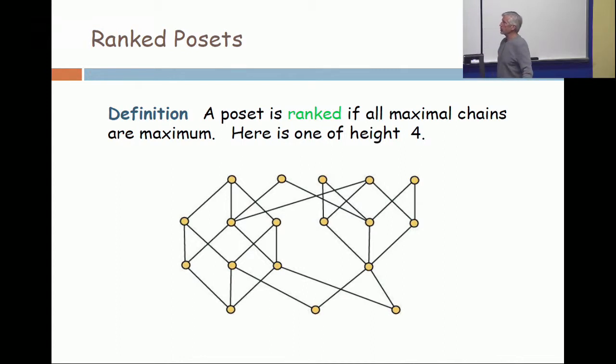Here's a ranked poset of height 4. It's got four ranks: rank 1, rank 2, rank 3, and rank 4. There are no maximal chains of size 2, 3, or 4. There are no loose points, so there are no maximal chains of size 1. All maximal chains have size 4.